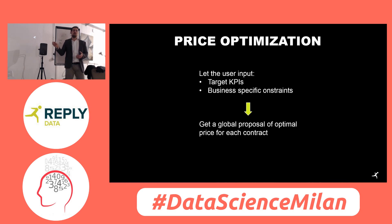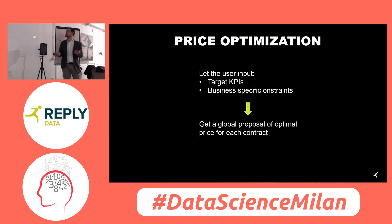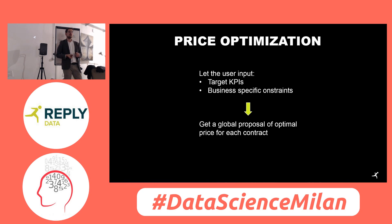The optimization problem is framed this way: you have one elasticity curve for each customer, and we let the marketing department set some targets on the global set of customers. For example, with 100 customers, they might say: we want an 80% renewal rate and a minimum margin of 80 euros total. The algorithm then optimizes all the prices for all the customers to achieve those targets. We let them set some constraints. The output is a set of prices — in this way, maybe you make one customer pay more and another pay less, because you are sure about the retention of one and want to gain the retention of another.